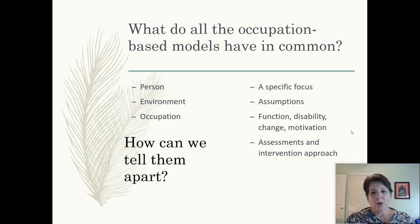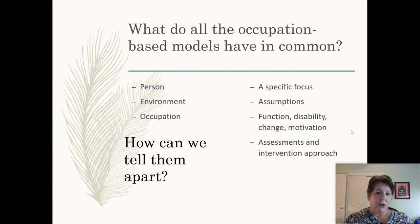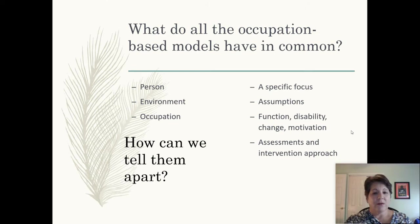As we get started, let's consider what all the different occupation-based models have in common. They all have some way of representing person, environment, and occupation. Most of them have a visual representation. They also have a specific way that they were designed to look at the world — some might focus more on the environment, others more on the person, such as the CMOP, where we put the human spirit in the center of the model. Others may focus more on the process of occupation. They all have a certain focus, which includes their own assumptions about those different characteristics.